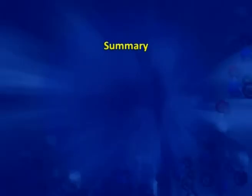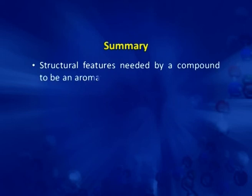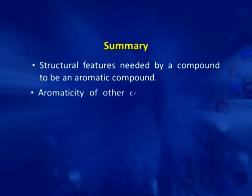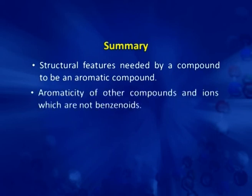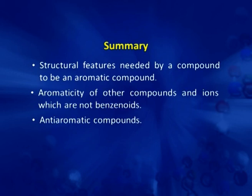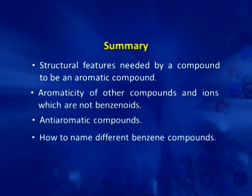So that is the nomenclature of benzene. Today we discussed structural features needed for a compound to be aromatic, aromaticity of non-benzenoid compounds, anti-aromatic compounds, and how to name different benzene compounds. In the next lecture, we will discuss electrophilic substitution reactions of benzene with their mechanism — how electrophiles are generated, how the electrophile attacks the benzene ring, and how we get back the benzene.